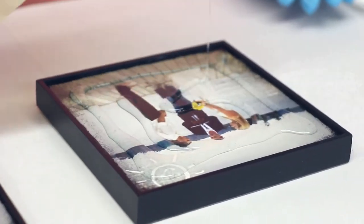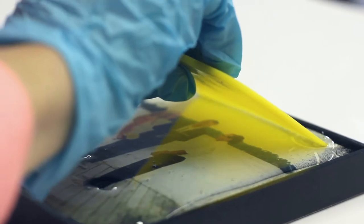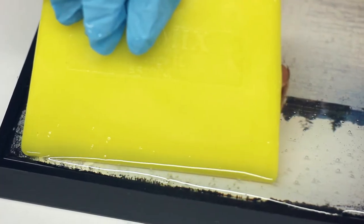And now you just pour right onto the art. I just used a spreader just to sort of push and drag the resin along and make sure everything's covered.